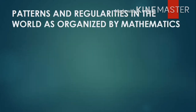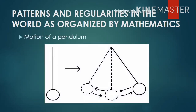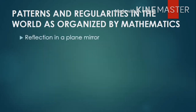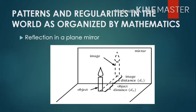Next, we have patterns and regularities in the world as organized by mathematics. The first is the motion of a pendulum, which shows that the time it takes to swing back to its original position can be explained by mathematics through regularities in motion. The second is the reflection in a plane mirror, which shows regularity in size and distance — the same size as the object seen in the mirror can be mathematically explained by the law of reflection.